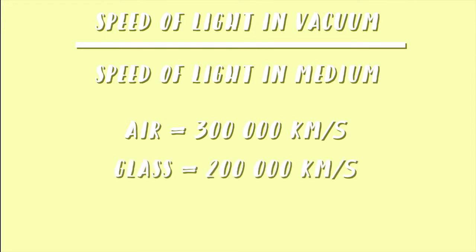However, in glass, the light slows down to 200,000 km per second. So, in the case of glass, the refractive index is 300,000 km per second over 200,000 km per second, which is equal to 1.5. A medium with a higher refractive index will have a higher bending effect on light because it slows the light more. An alternative definition of the refractive index is the equation: refractive index equals sin i over sin r, where i is the angle of incidence and r is the angle of refraction.